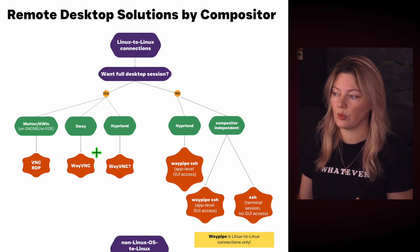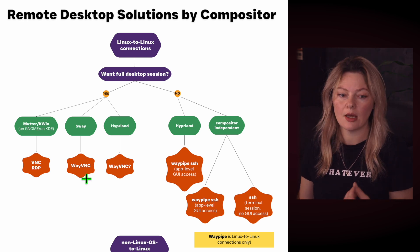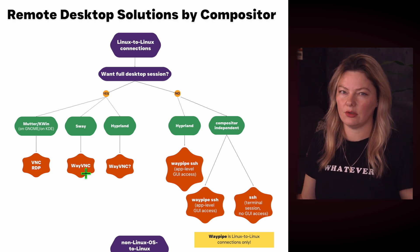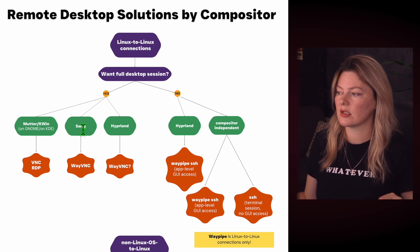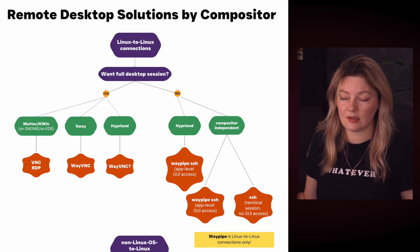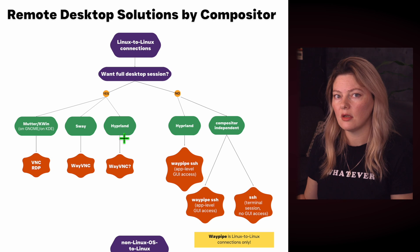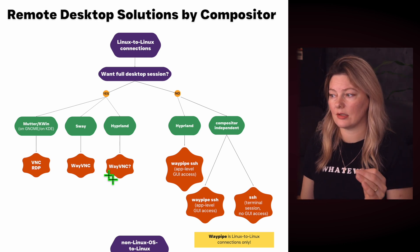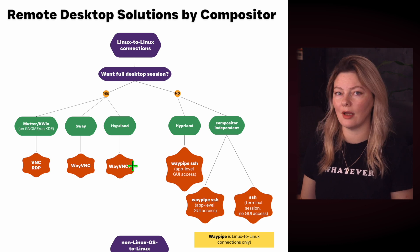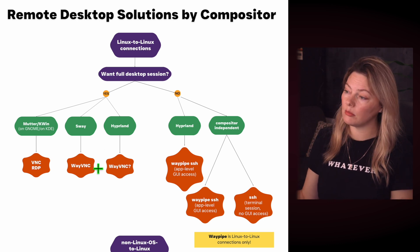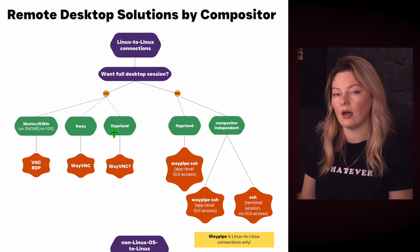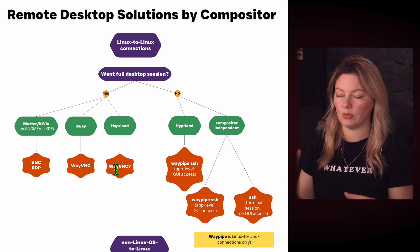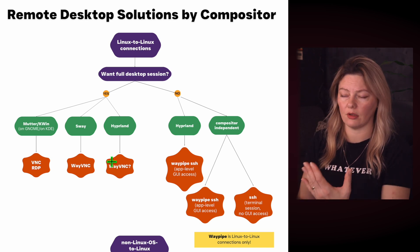Then there is Sway, which uses WayVNC as the tool to set up remote desktop connections — WayVNC was designed specifically for that compositor. With Hyperland, it's a bit trickier: there isn't an official solution confirmed yet, but you can experiment with WayVNC. I searched Reddit and subreddits and found some solutions where people were able to use WayVNC with a Hyperland compositor, but it's not guaranteed to work and might be tricky to set up. All of these solutions should give you a full desktop environment where you can easily switch between apps and windows — it's as if you're sitting right in front of that computer.